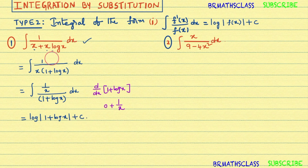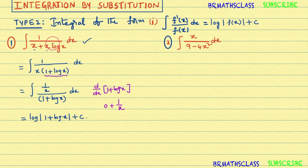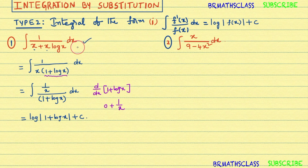If you want to do this problem by substitution method, take 1 + log x = t and proceed with substitution as done in previous classes. But it is not always necessary to use substitution. Later in this chapter, we need to write steps directly to avoid lots of simplification, so you must know how to write these answers directly.